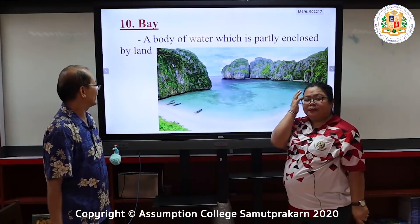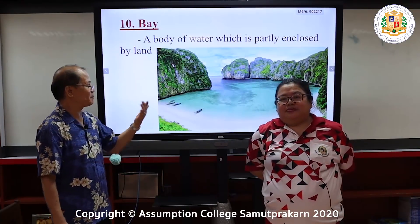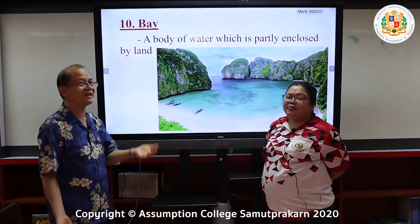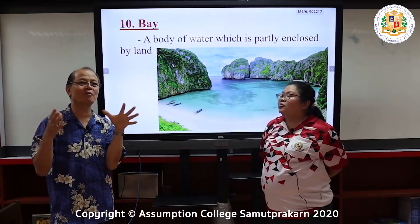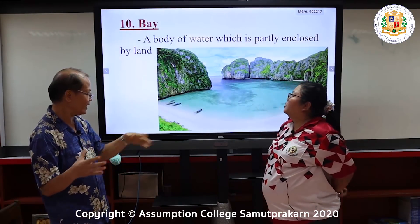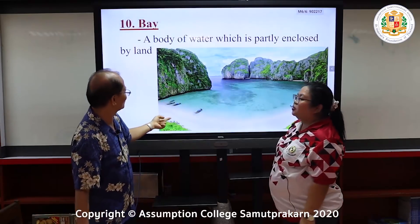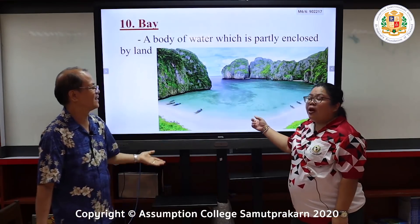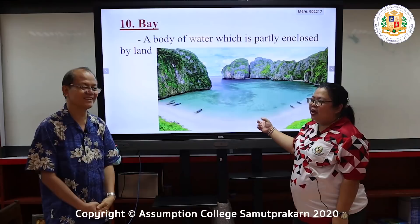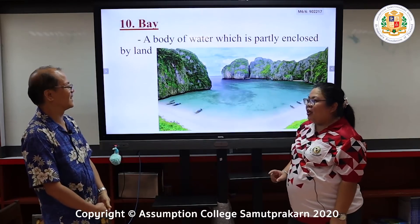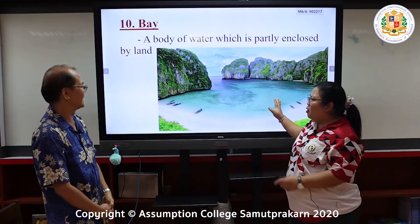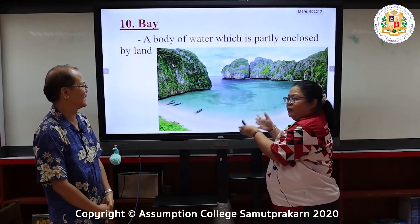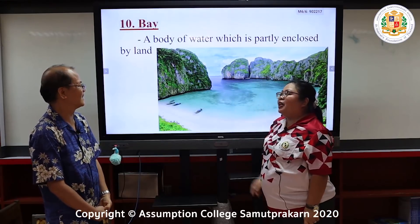A bay is a body of water which is partly enclosed by land, and a bay is much smaller than a gulf. An example shown here appears to be Maya Bay in Phuket and Krabi, in the PP Islands area.